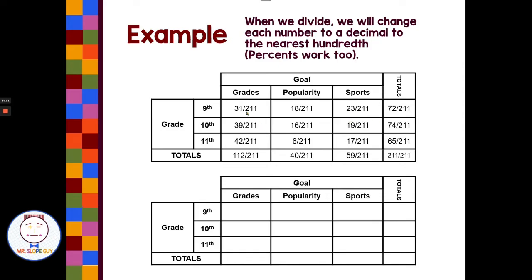And we're going to take each number, 31 divided by 211, and we're going to basically change everything to a decimal. So when we divide, we'll change each number to a decimal to the nearest hundredth. And you also sometimes see this as a percent. So we know that 0.15 is the same as 15%. So if you see this in decimal form or percent form, you're well aware of equivalents that 0.15 and 15% would be the same.